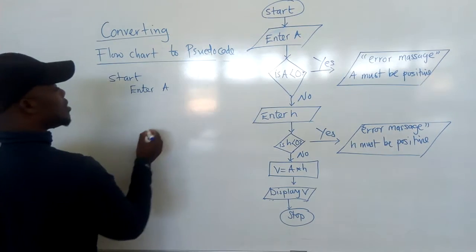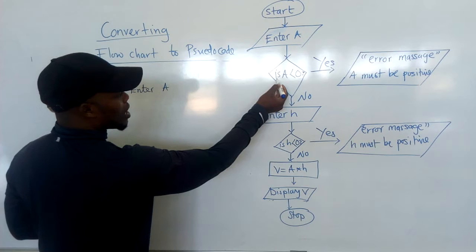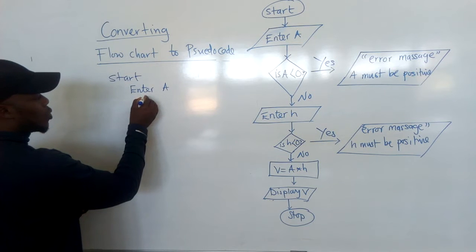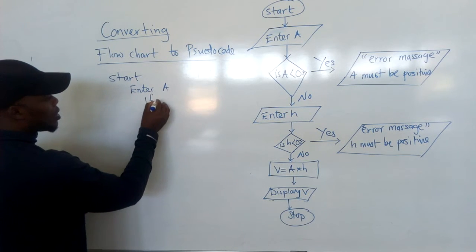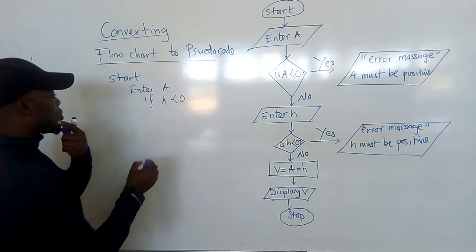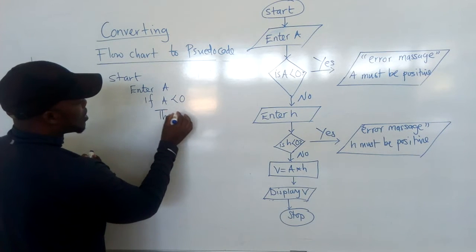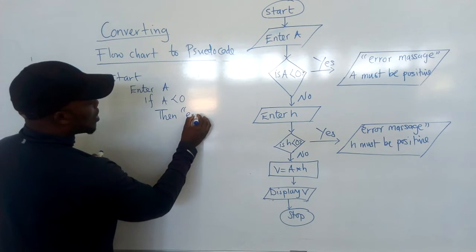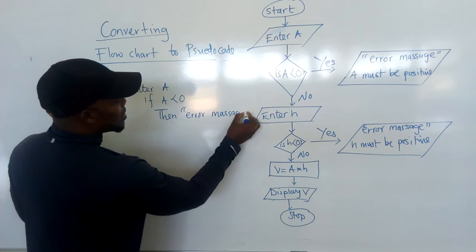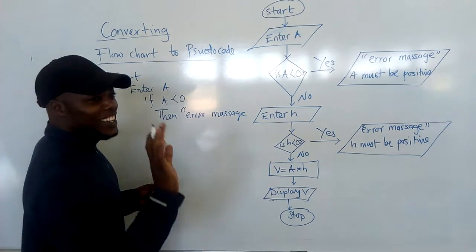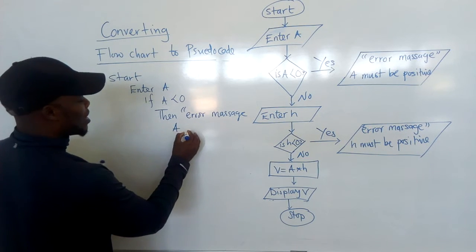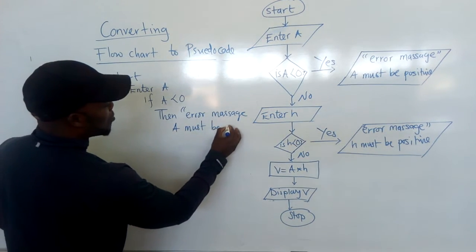Then here, this is the decision box. If you can see here, there is a question: is A less than zero? For pseudocode, you write: IF A is less than zero. And if A is less than zero, what follows? You write THEN, and then the error message: 'A must be positive'. You just copy what is here.